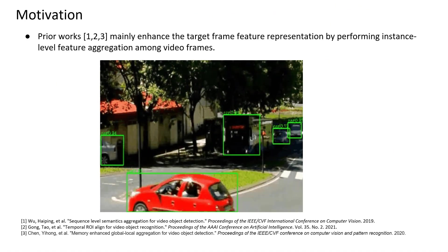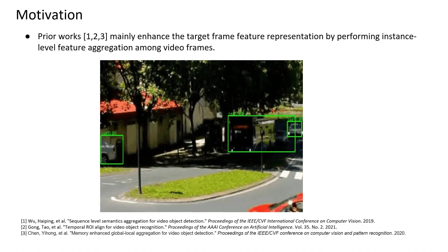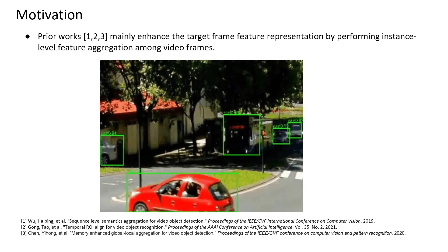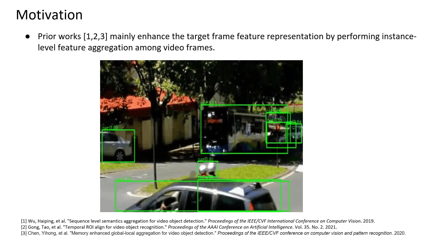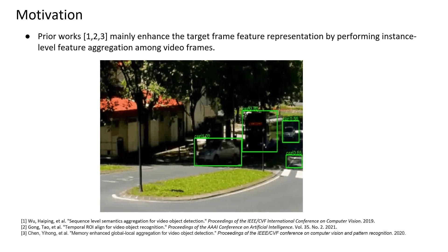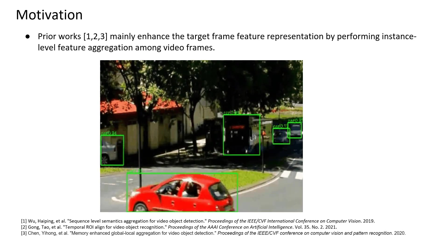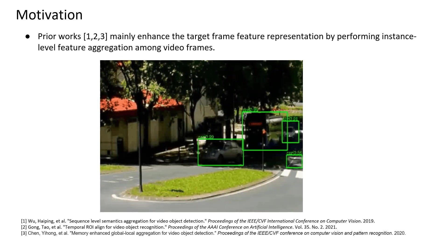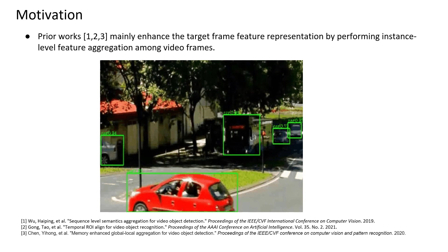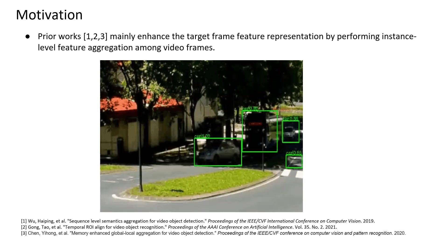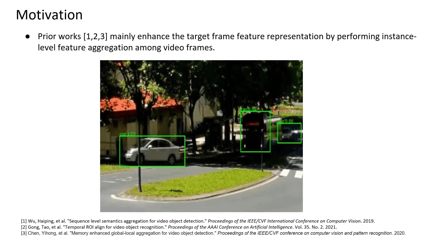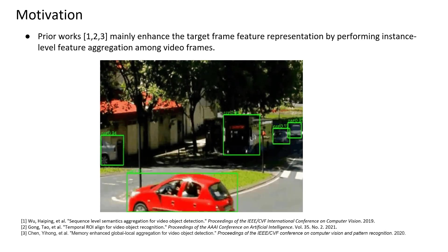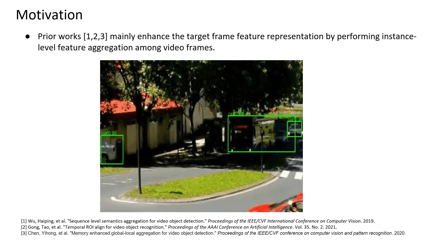The primary task of video object detection is quite similar to still image object detection, in which objects in each video frame need to be localized and classified. However, owing to the deteriorated object appearance caused by motion blur and part occlusions in videos, exploiting the encoded temporal information in videos has become a de facto choice to tackle these challenges.